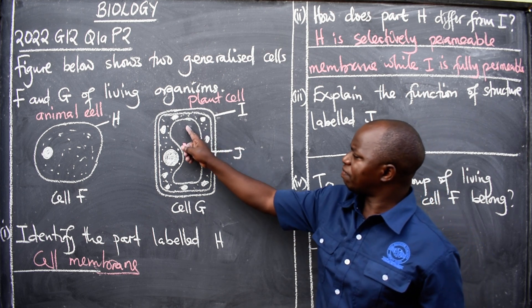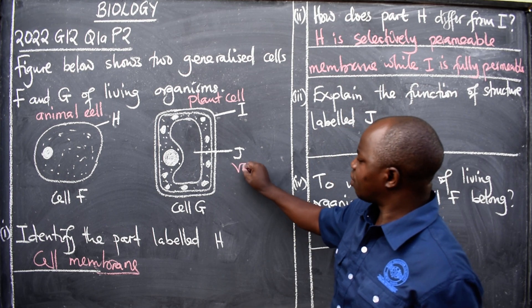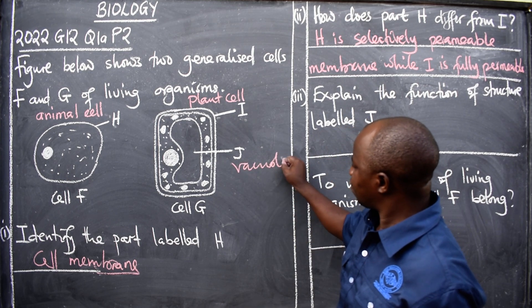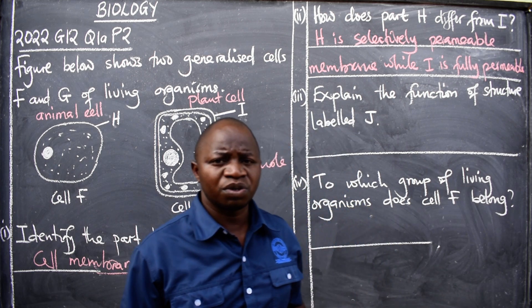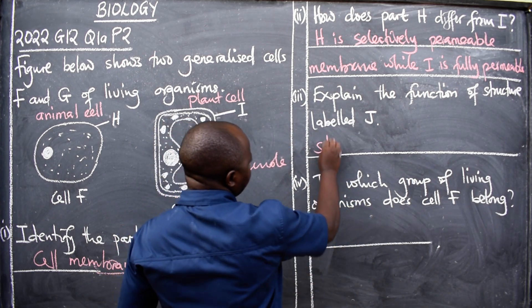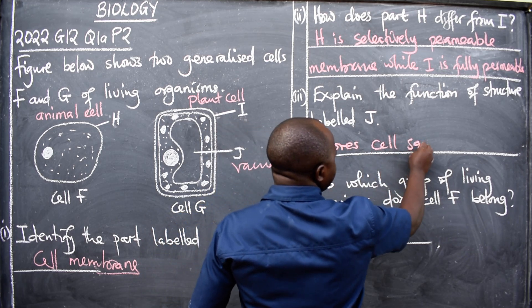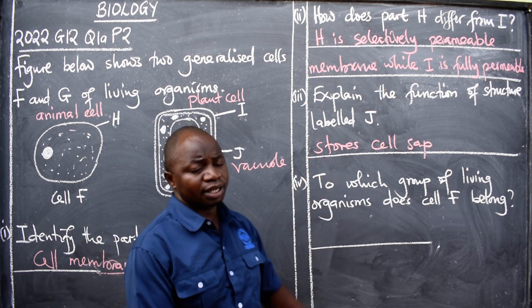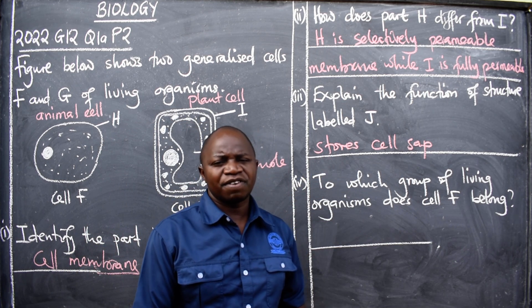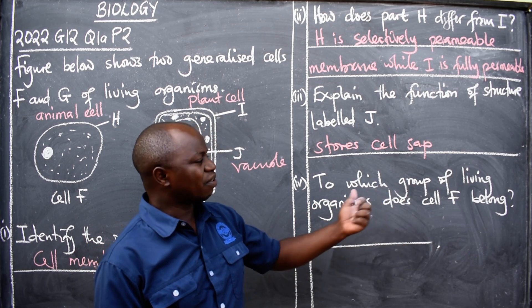Explain the function of structure labeled J. Where is it? Here. What is the function of this? First of all we have to identify this. So this is called the vacuole. Okay, now what's the function of the vacuole? It stores. So say stores, it stores cell sap. That's the function.